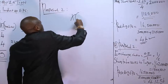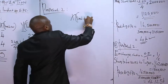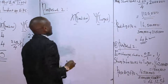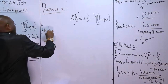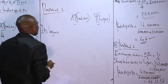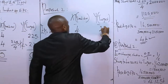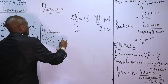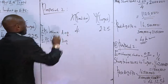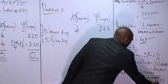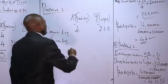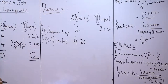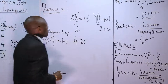In Proposal Two, X is the predator and Y is the target. The EPS before the merger remains four shillings for X and two point two five shillings for Y. After the acquisition, the computed post-acquisition EPS for the company is four point one two five shillings.